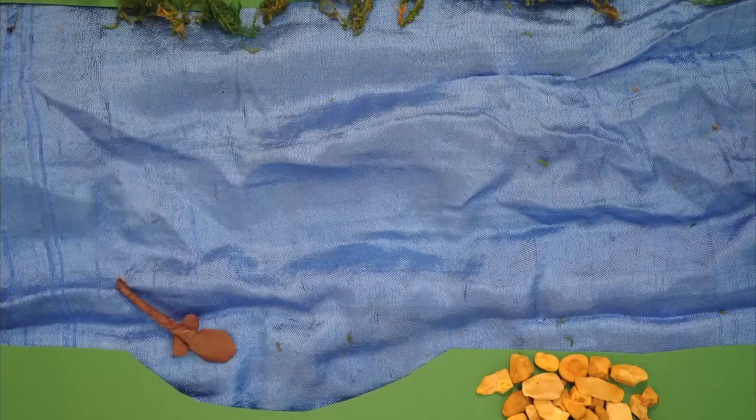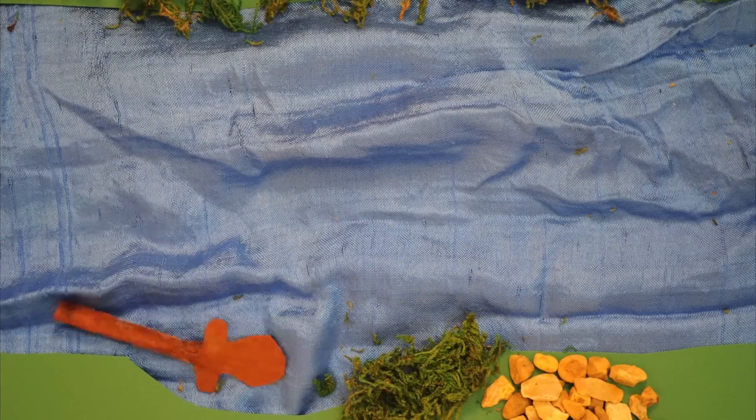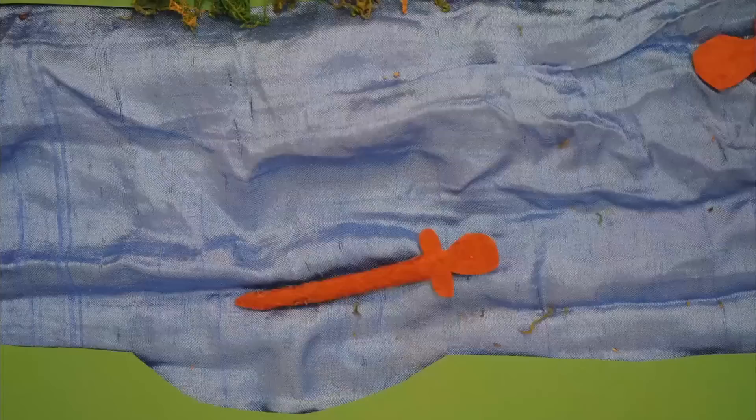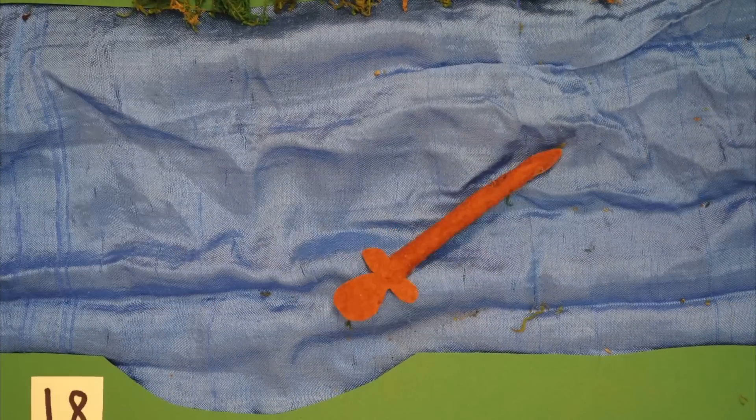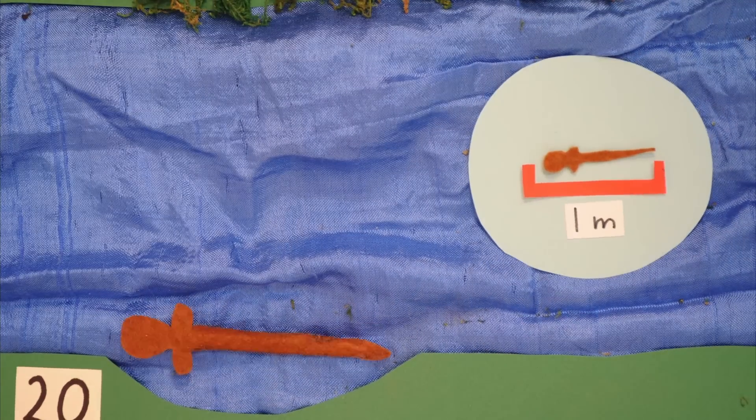Once an elver has found a suitable habitat, with good hiding spots and plentiful food, it will settle down to live and grow there, transforming into a yellow eel. Males may live in this state for up to 12 years, while larger females may spend as long as 20 years as yellow eels, and grow up to a metre long.